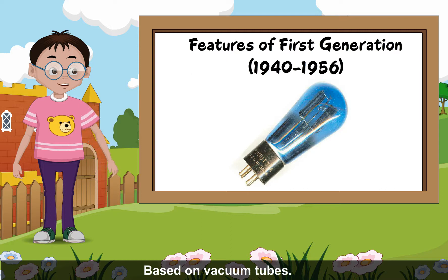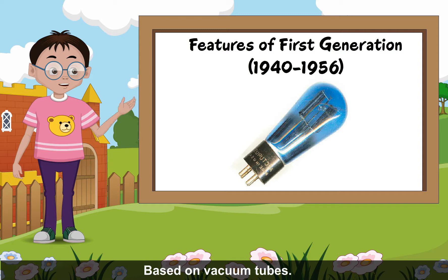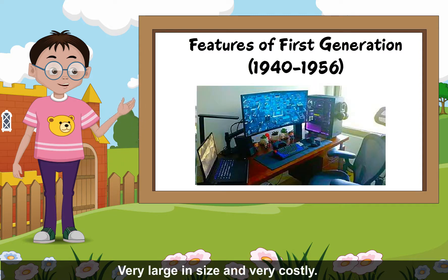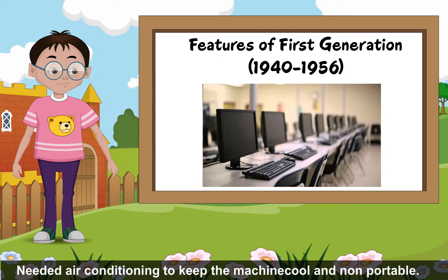Features of the First Generation, 1940–1956: Based on vacuum tubes. Consumed a lot of electricity. Very large in size and very costly. Needed air conditioning to keep the machine cool and were non-portable. Had slow input and output.